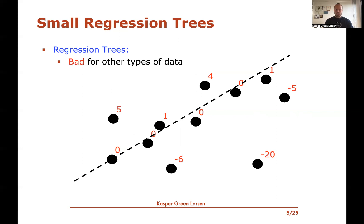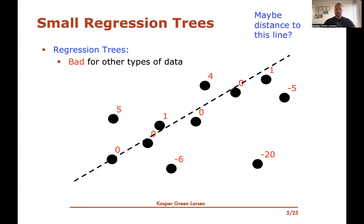Regression trees are excellent for some types of data — for instance, data that can easily be separated into a lower left corner where all the numbers are close to each other, and a remaining part where numbers are also close to each other. You can build a regression tree using a vertical split. However, there are also other types of data where regression trees do not perform so well — for example, where labels depend on the distance to a line, with positive values above the line and negative values below.